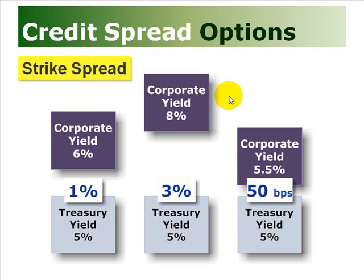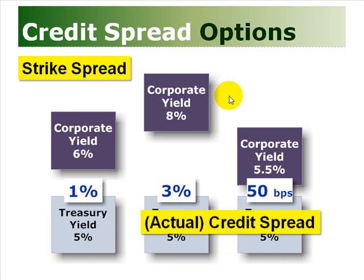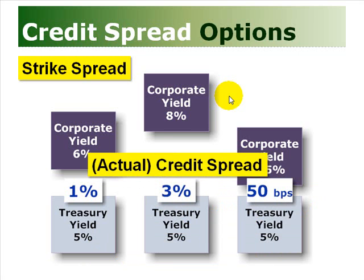For the credit spread option, the instrument is going to have a strike spread, which is typically fixed at the time of purchase of the option — it's built into the instrument. The actual credit spread will then vary over the life or tenor of the credit spread option.